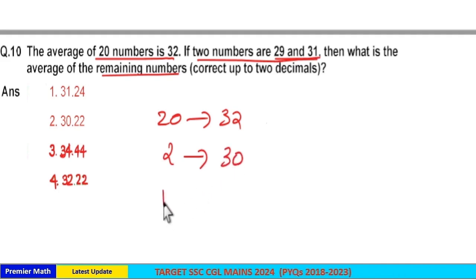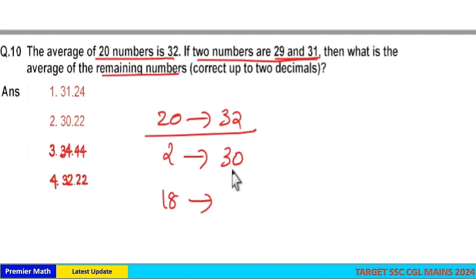Now we have to find average of remaining 18 numbers. Here if I consider common average as 30, here this is 32 which is plus 2 greater than common average 30. So this plus 2 increment and this average is for this 20 numbers.